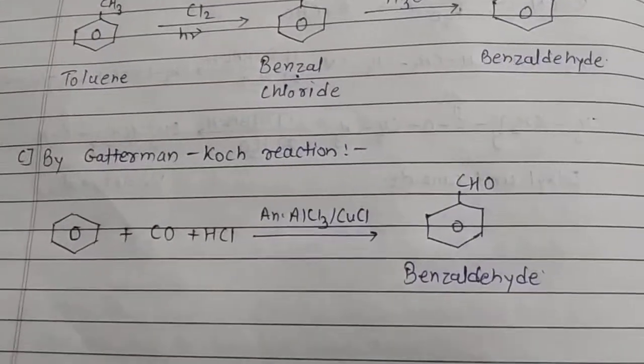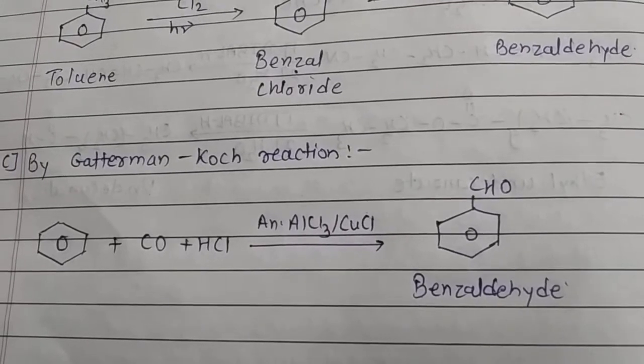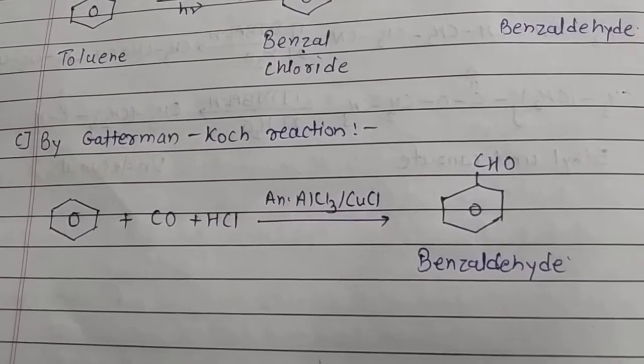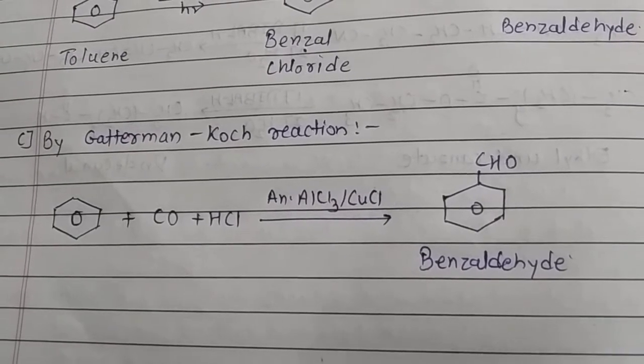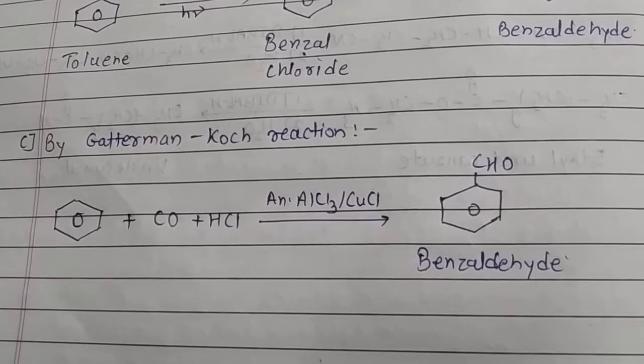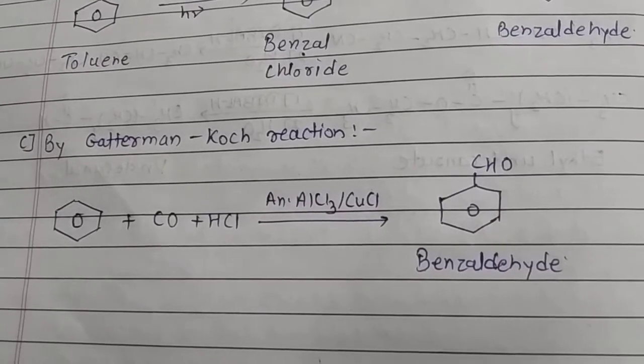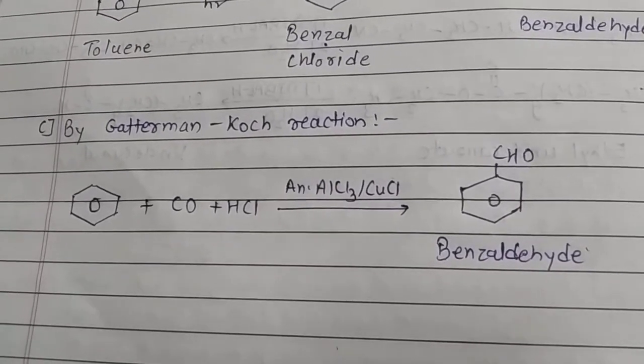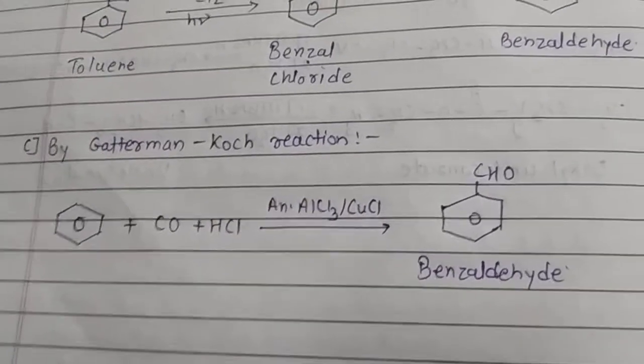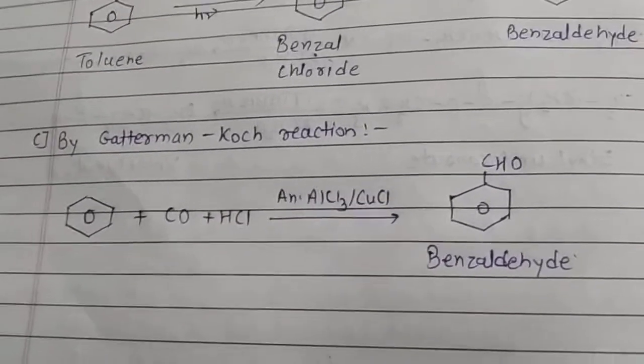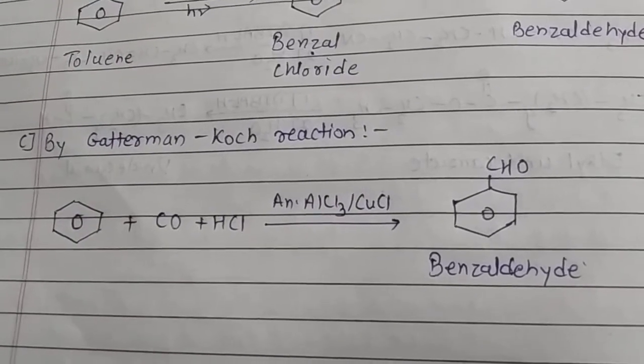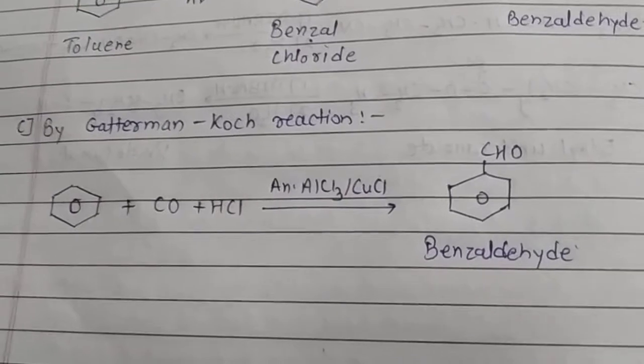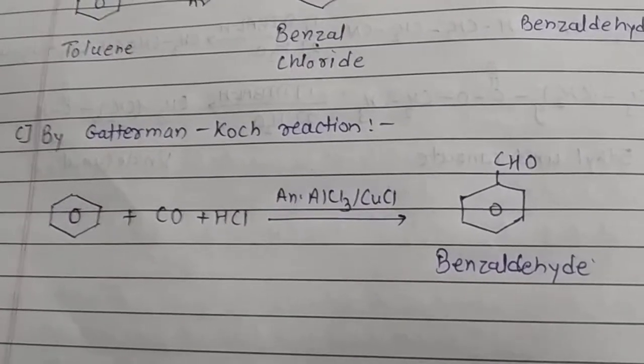Last reaction for preparation of benzaldehyde is Gatterman-Koch reaction, in which benzene is used as reactant with carbon monoxide and hydrochloric acid. The catalyst used is anhydrous aluminum chloride, anhydrous means no water content, or we can use copper chloride. Hydrogen is replaced by CHO from the benzene ring and we get benzaldehyde as the product.